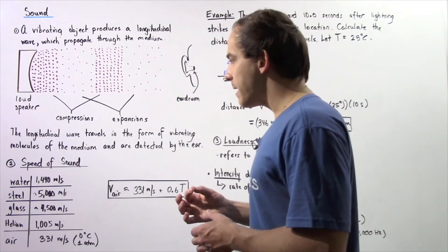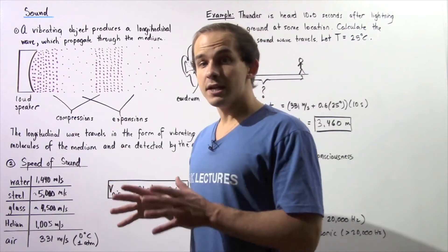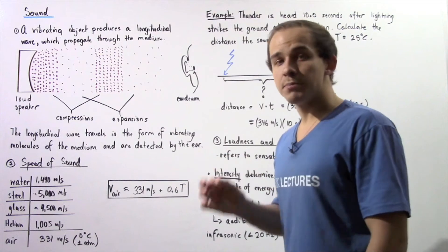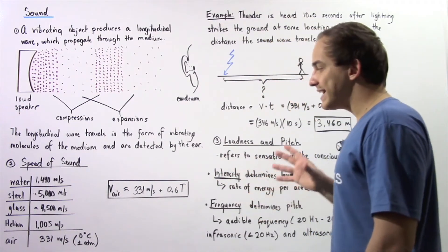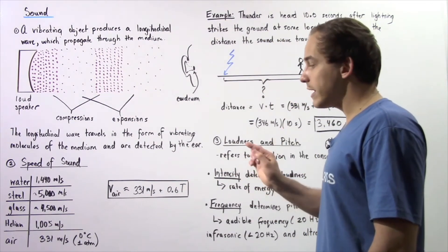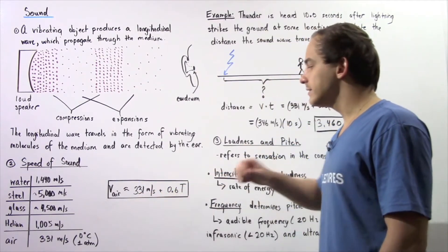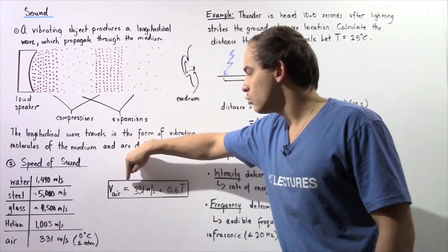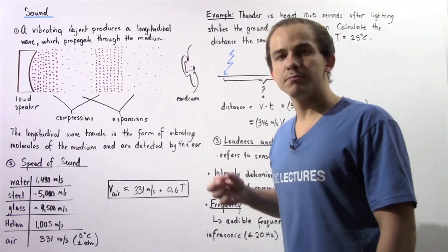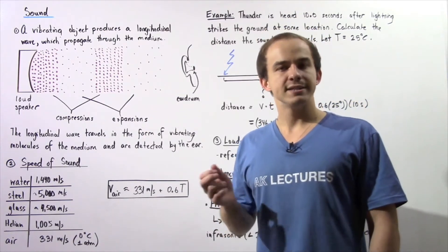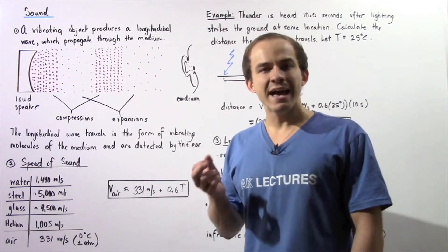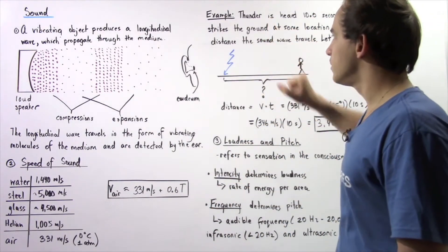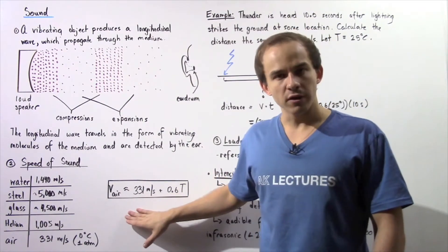When we're talking about the propagating wave in air, the speed depends on temperature. The equation that gives us the velocity of our sound wave in air is the following: velocity in air is approximately equal to 331 meters per second plus 0.6 multiplied by T, where T is the temperature in Celsius. Let's look at an example in which we're going to apply this formula.